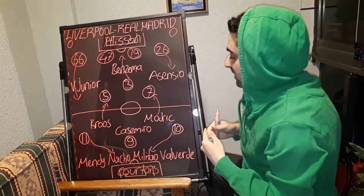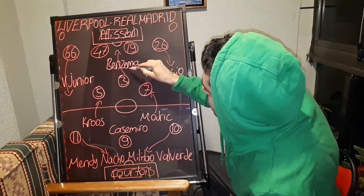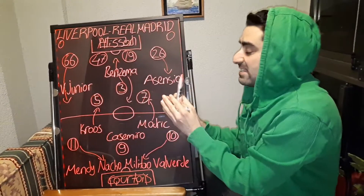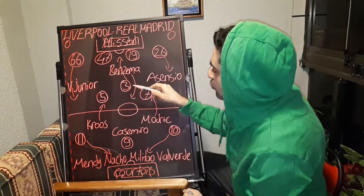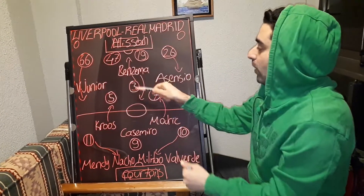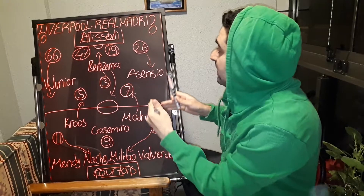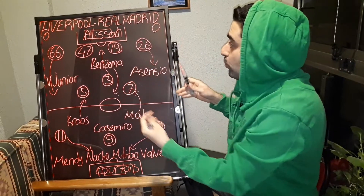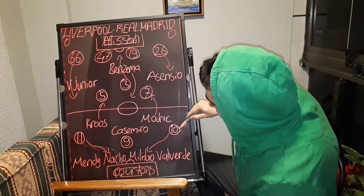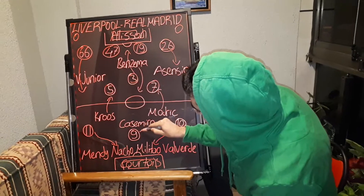In Real Madrid, Benzema dropped deep and came back to midfield. Benzema played close to Fabinho and covered him. At the same time, sometimes Liverpool made a higher press on the forward with Salah and Mane, and Firmino played close to Casemiro.